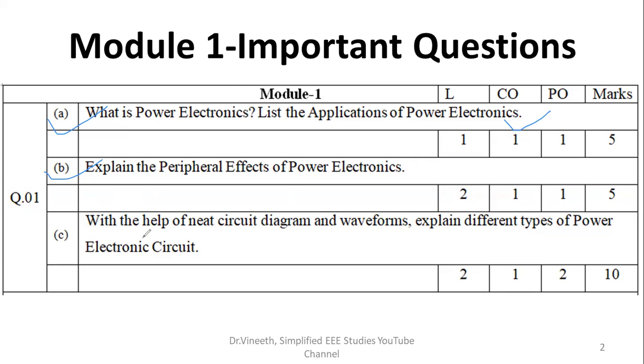Then another question is with the help of neat circuit diagram and waveforms explain different types of power electronics circuits. So you have to explain DC to DC converter, DC to AC inverter, AC to AC voltage regulator, and AC to DC power rectifier. You have to explain individually. Circuit diagram is most important. Each circuit diagram has weightage. These are the different varieties of circuits you are supposed to explain for this particular question.